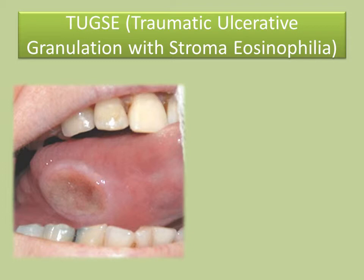The vascular connective tissue due to the ulceration may become hyperplastic and cause surface elevation. A subset of TUGSE may present with CD30-positive T lymphocytes.